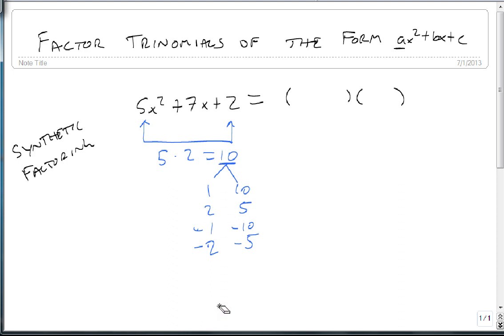And we add these together. 1 plus 10 is 11, 2 and 5 is 7, minus 11, minus 7. And we want the one that matches our middle, just like before. And that's the positive 7. So this is our row.